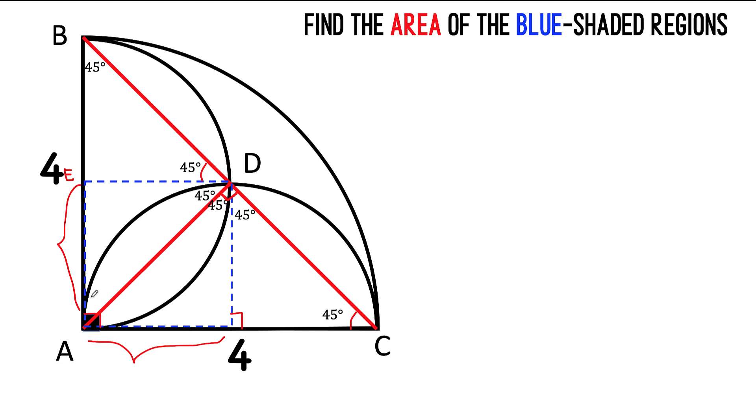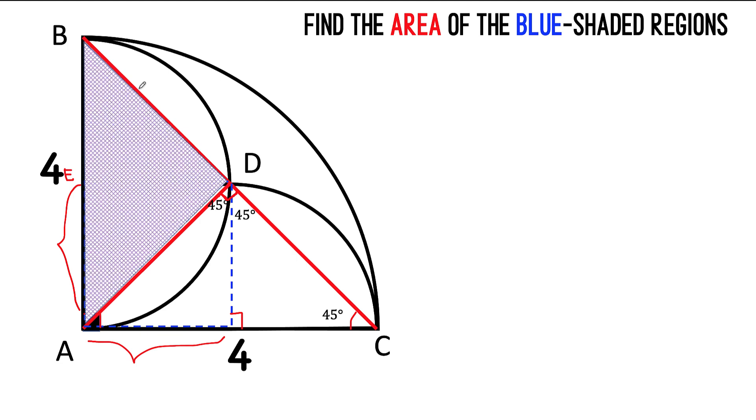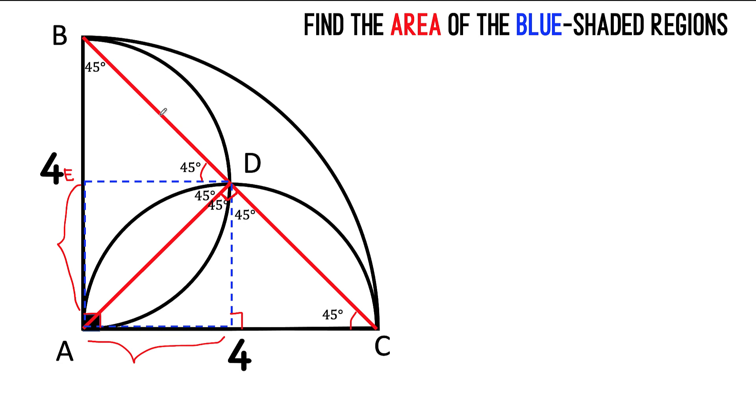You have here 45, you have 45 degrees here, and you have 90 degrees here. What we have here is an isosceles right triangle BDA, that means side BD must be congruent to side AD.